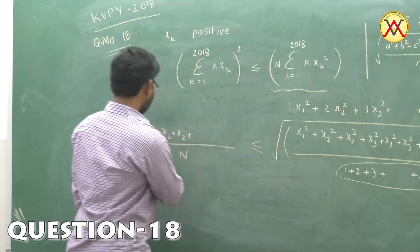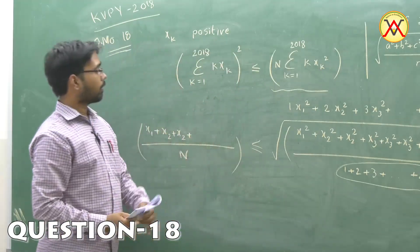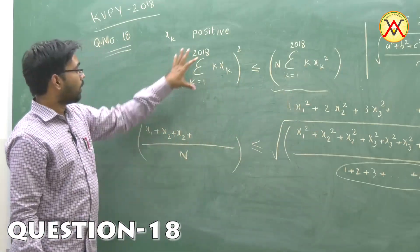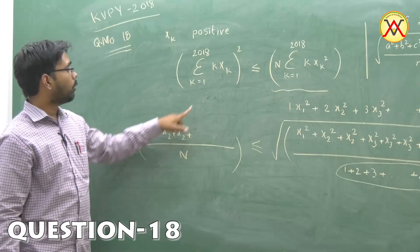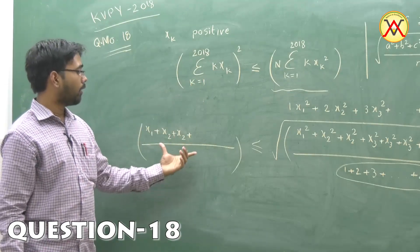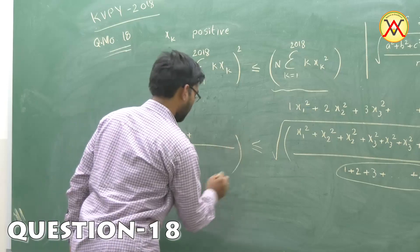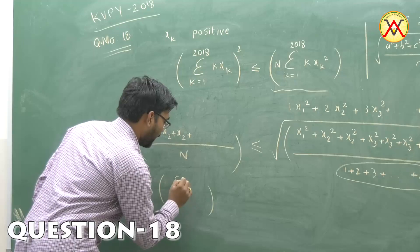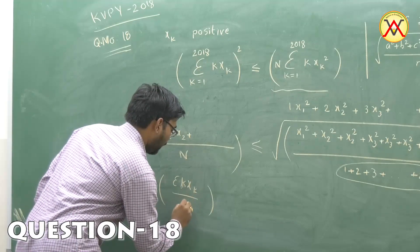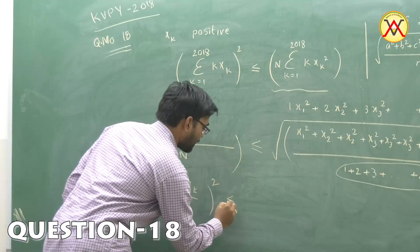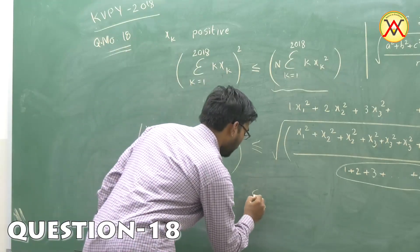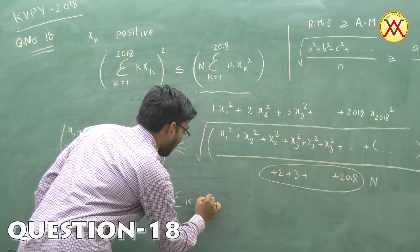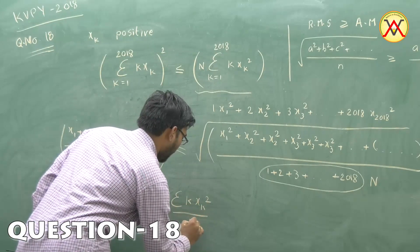We have proved that this inequality is true. If you bring the root to this side, the left-hand side is (Σk·xk/N)². So we have (Σk·xk/N)² ≤ Σk·xk²/N.